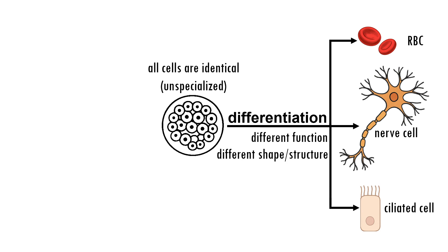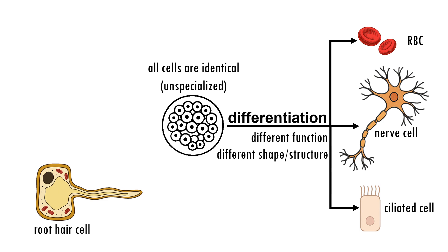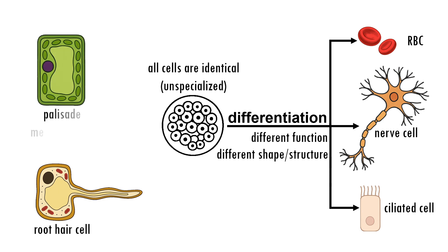Humans are thought to have around 200 different types of specialized cells. In plants, examples include root hair cells and palisade mesophyll cells, although there are many more. These different types of cells are known as specialized cells.